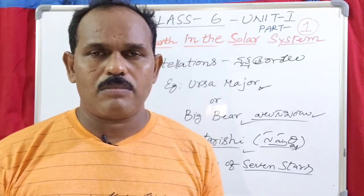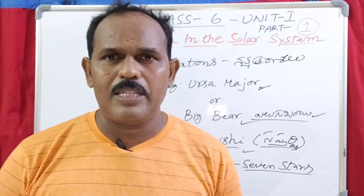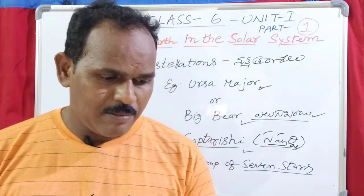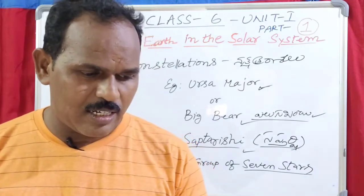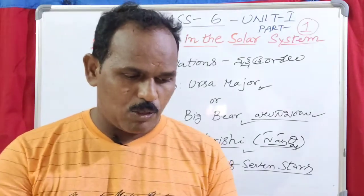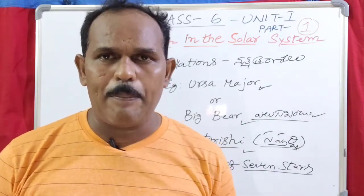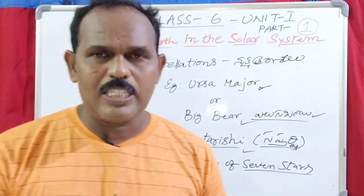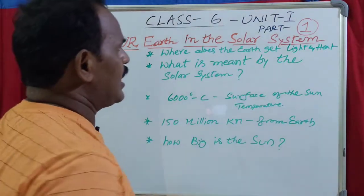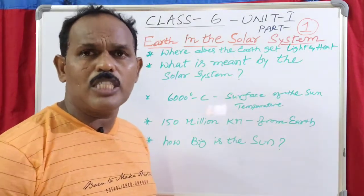The Pole Star always remains in the same position in the sky. We can locate the position of the Pole Star with the help of Saptarshi — the Ursa Major constellation.